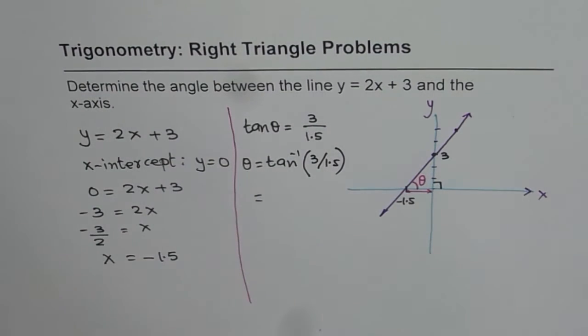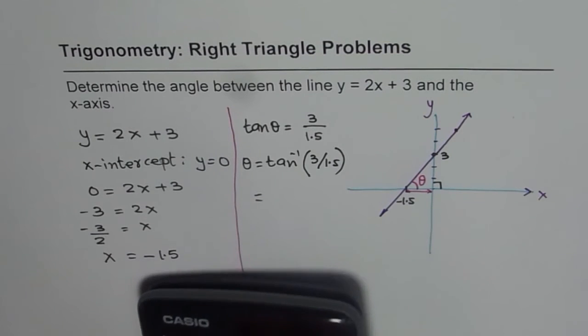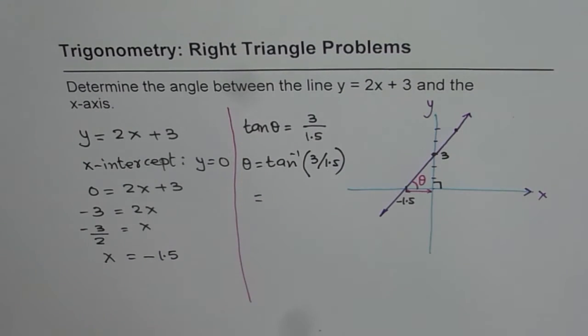Which equals, we can take the calculator, find the answer. So second function gives us tan inverse. Within bracket 3 divided by 1.5, bracket close, equal to, we get 63.4349.